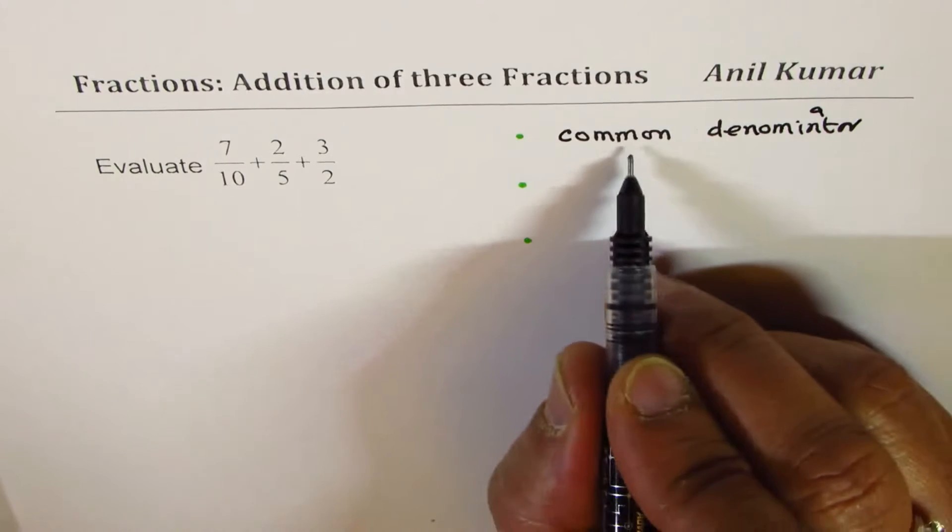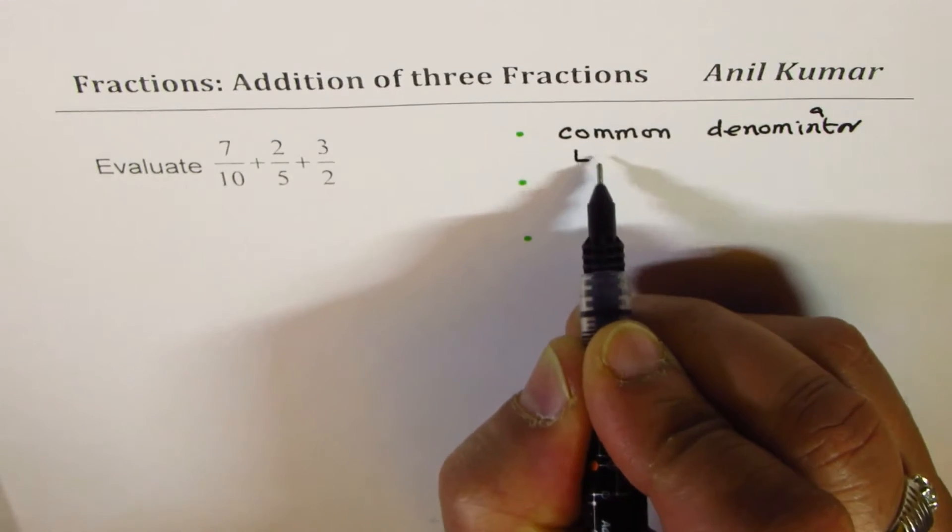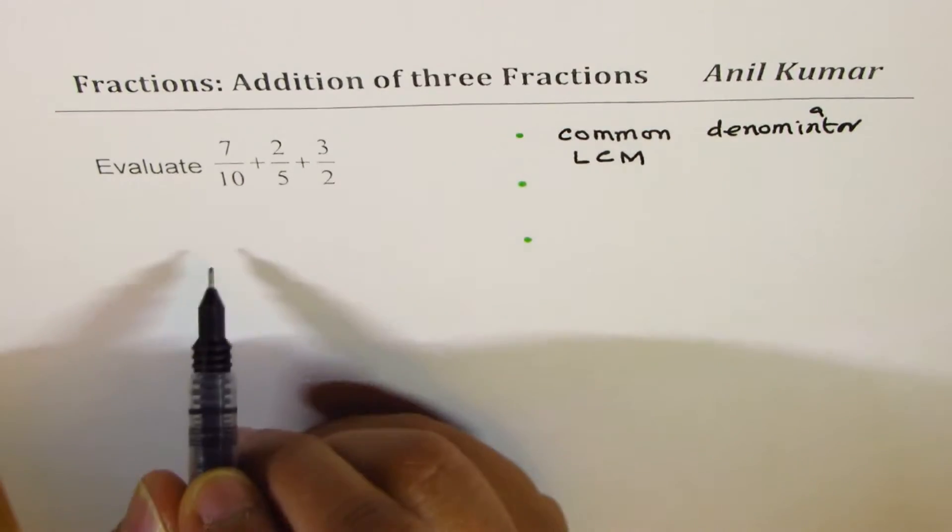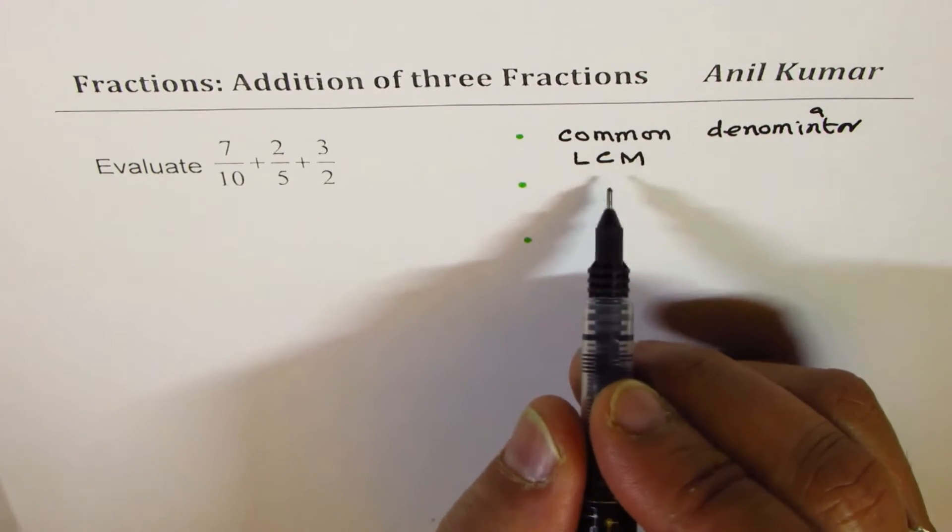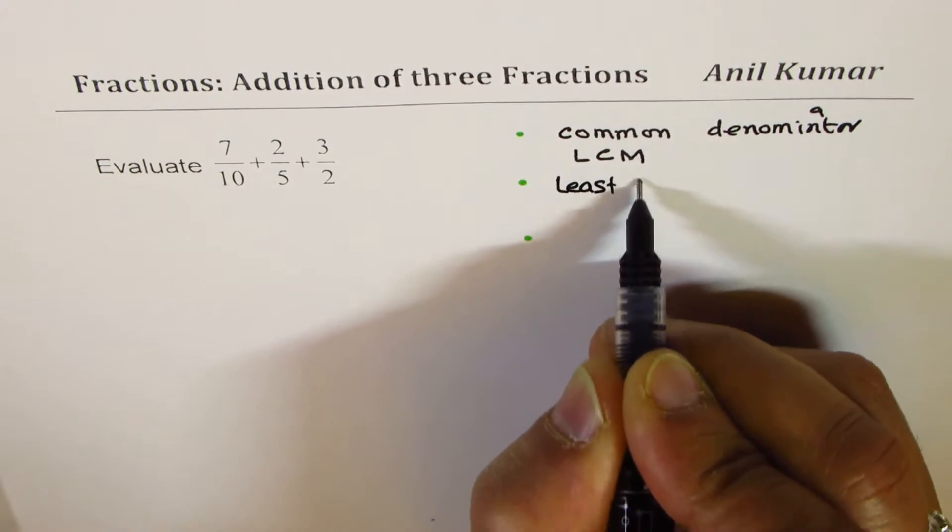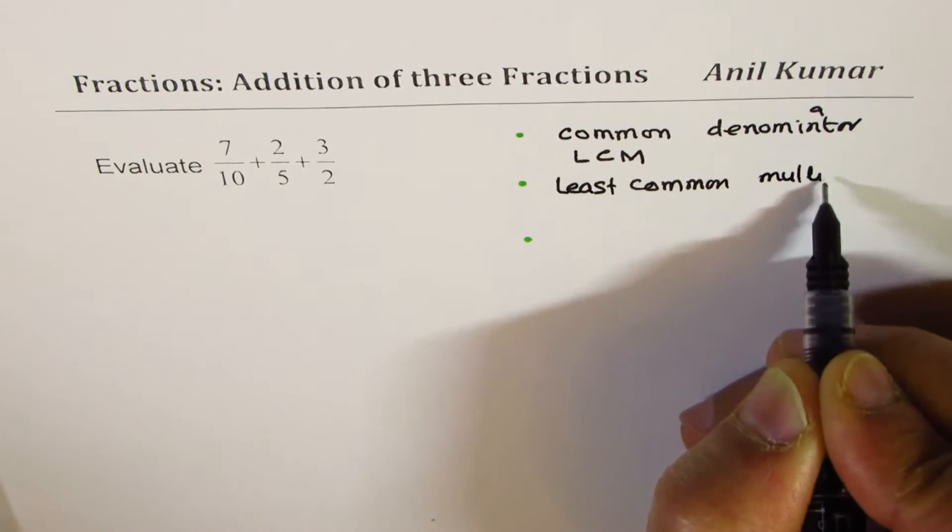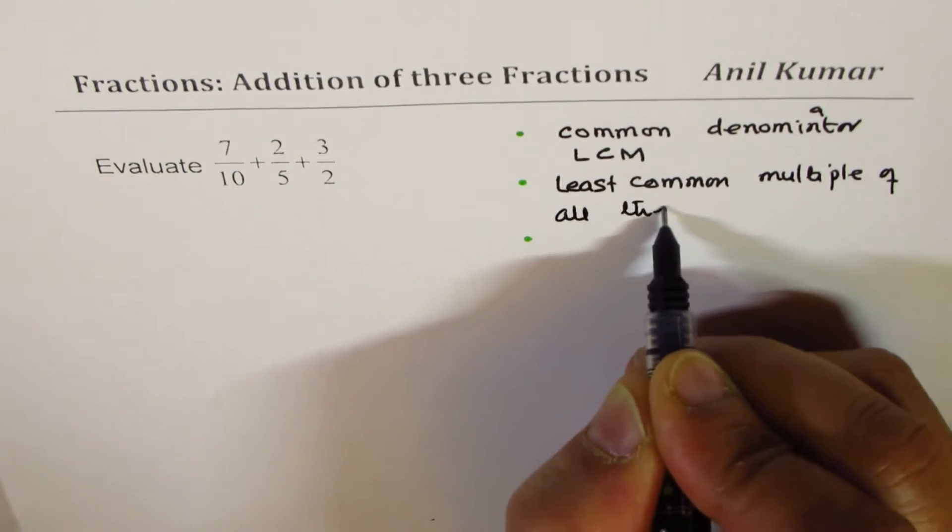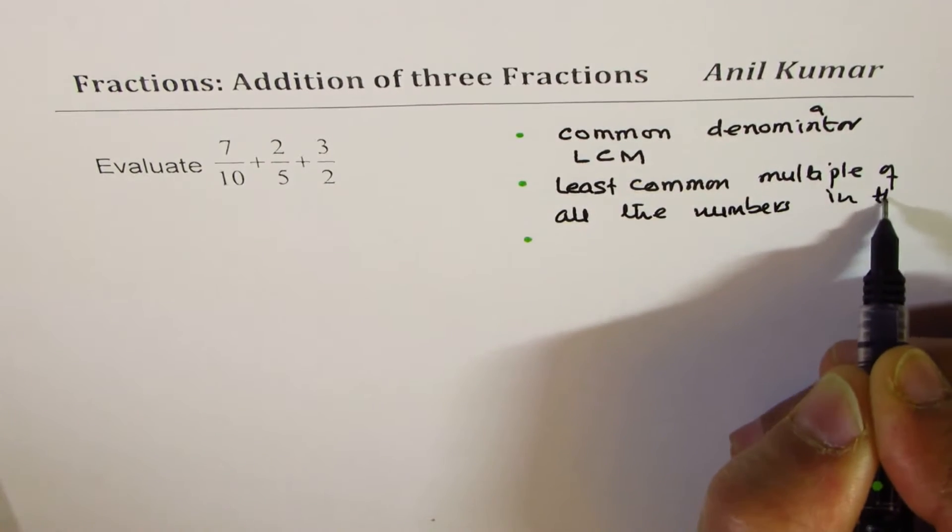Now how do we get common denominator? This common denominator is also termed as LCM, least common multiple of the numbers in denominator. So we have to find a technique of getting the LCM. We have to get the least common multiple of all the numbers in the denominator.